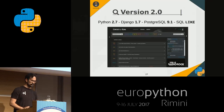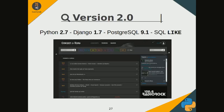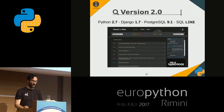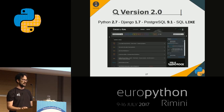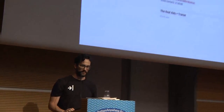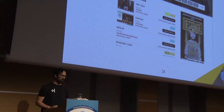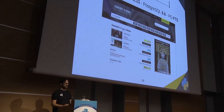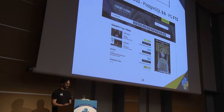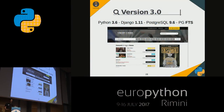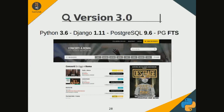This is version two — the old version of the website, developed some years ago with Django 1.7 running on Python 2.7. The data was managed by Postgres version 9.1 and search was performed only using SQL LIKE syntax with filter. Version three is the new version, recently released, developed with Django 1.11 running on Python 3.6. The data is managed by Postgres 9.6 and the search uses its full-text search engine.